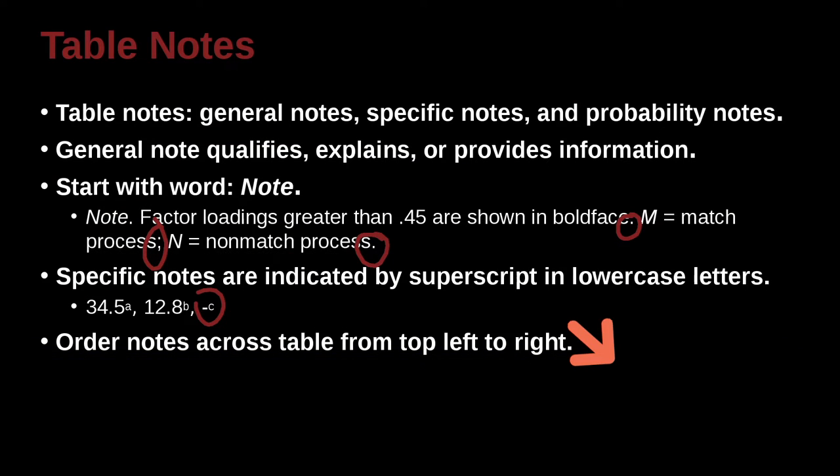Order notes across the table from left to right, and that is to say that when you're making your table, your table kind of has a square form, doesn't it? So it's kind of like a box, right? And so you probably want to begin with your a up here, and then you want to have your b, and then your c, and then d notes something like this. So order notes across the table from top left to right.